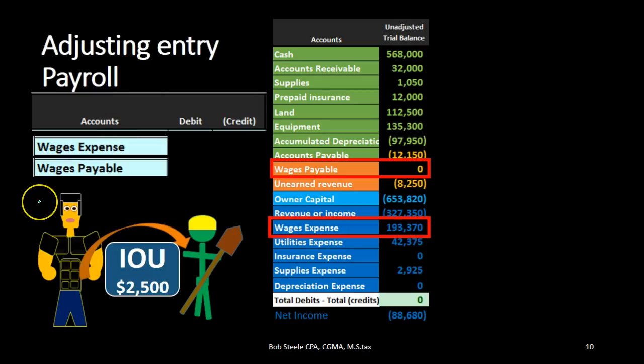Now let's talk about what's going on. Wages are usually recorded on a cash basis — the simplest process is paying people every Friday. When we pay them, we debit wages expense and credit cash. But what if the end of the time period doesn't land on Friday? If our cutoff date — year-end, 12/31 — lands on a Wednesday, that means workers have worked three days for which they have not been paid, and they will be paid in the next year.